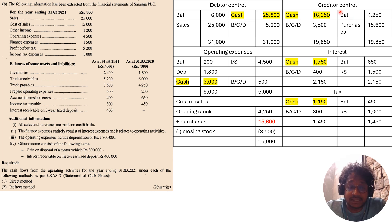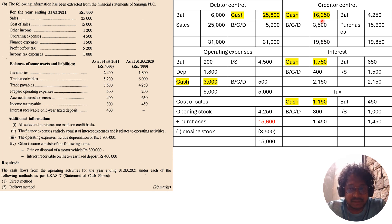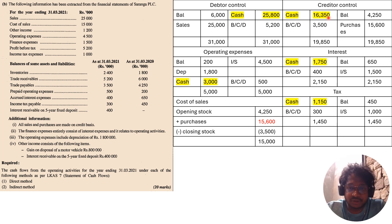The creditors opening balance is 4,250 and closing balance is 3,500. By recording all the opening and closing balances and the purchases in the creditors control account, you can find out the amount paid to creditors, which is 16,350. The cash received from debtors is a cash inflow and the amount paid to creditors is a cash outflow — both come under operating activities.